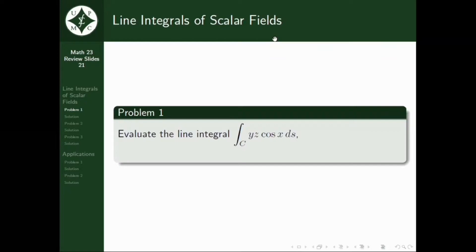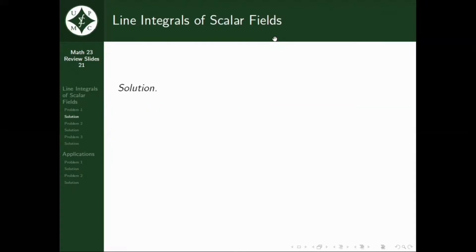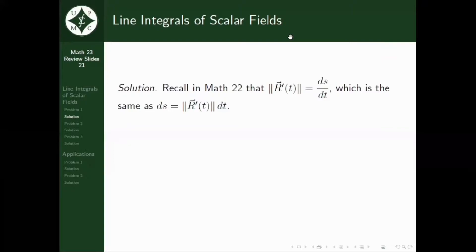For the first problem, we are asked to evaluate the line integral yz cosine x ds over c, where the vector r is given by (t, 3 cosine t, 3 sine t), where t ranges from 0 to pi. A good recall for solving this problem is that from Math 22, we have known that the norm of r' is equal to ds over dt, and equivalently, ds is equal to the norm of r' dt.